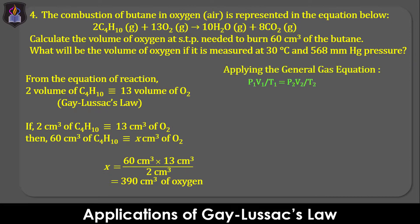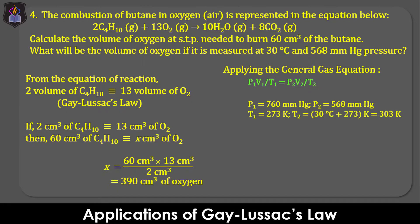Next, we apply the general gas equation P₁V₁/T₁ = P₂V₂/T₂, where P₁ is the initial standard pressure of 760 mmHg and P₂ is the final pressure of 568 mmHg. T₁ is the initial standard temperature of 273 K, and T₂ is the final temperature of 30 degrees Celsius, equivalent to 303 K. V₁ is 390 cm³, the volume calculated at STP, and we are to determine V₂.